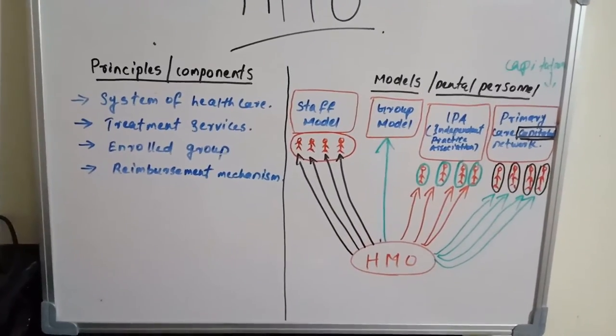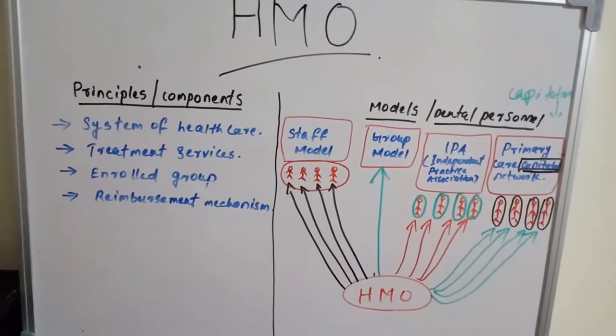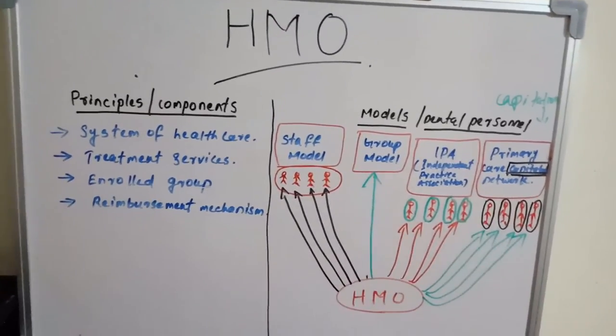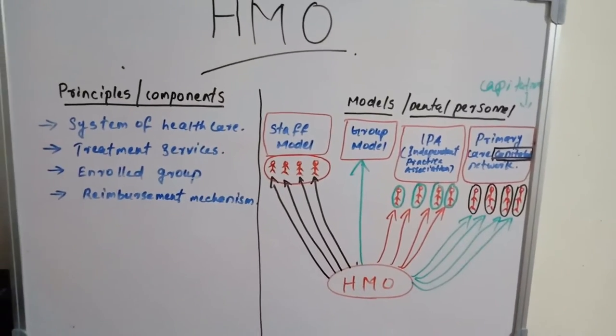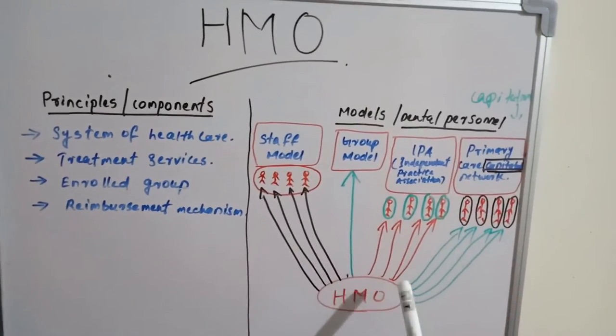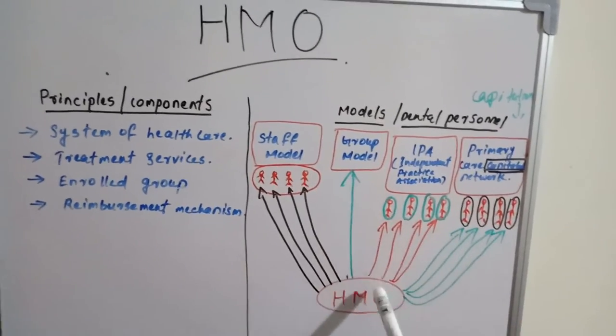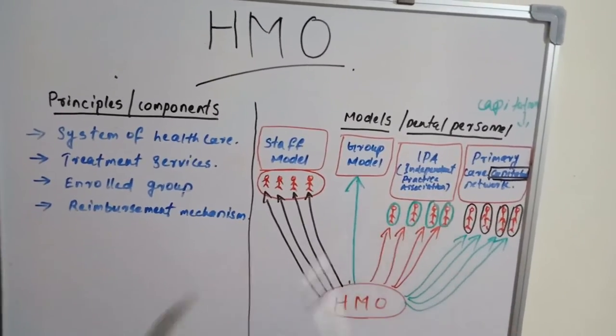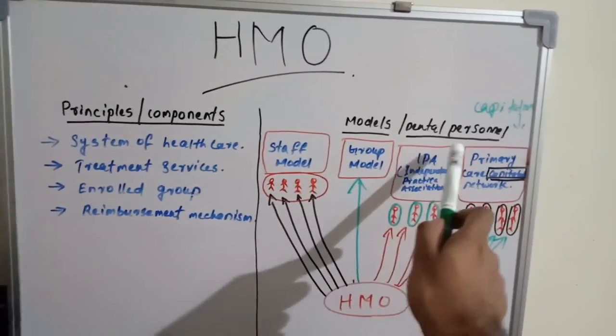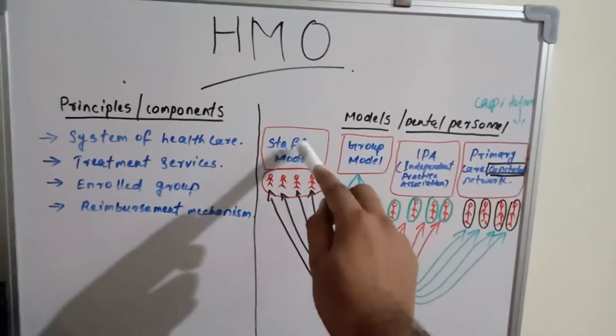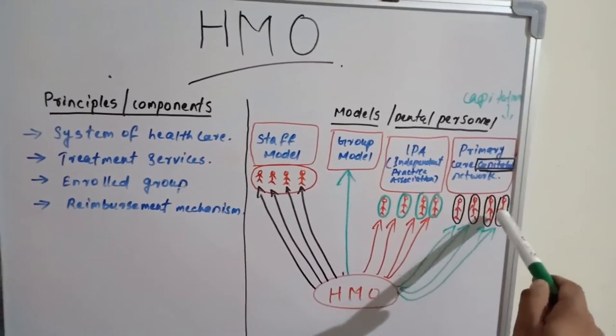These two are group model. This is an independent practice, like individually they are practicing at different places, but they are agreed with the HMO plans, so they also get individually the reimbursement. These are different because this is not a group model, these two are group model, and this is again an independent practice association type.